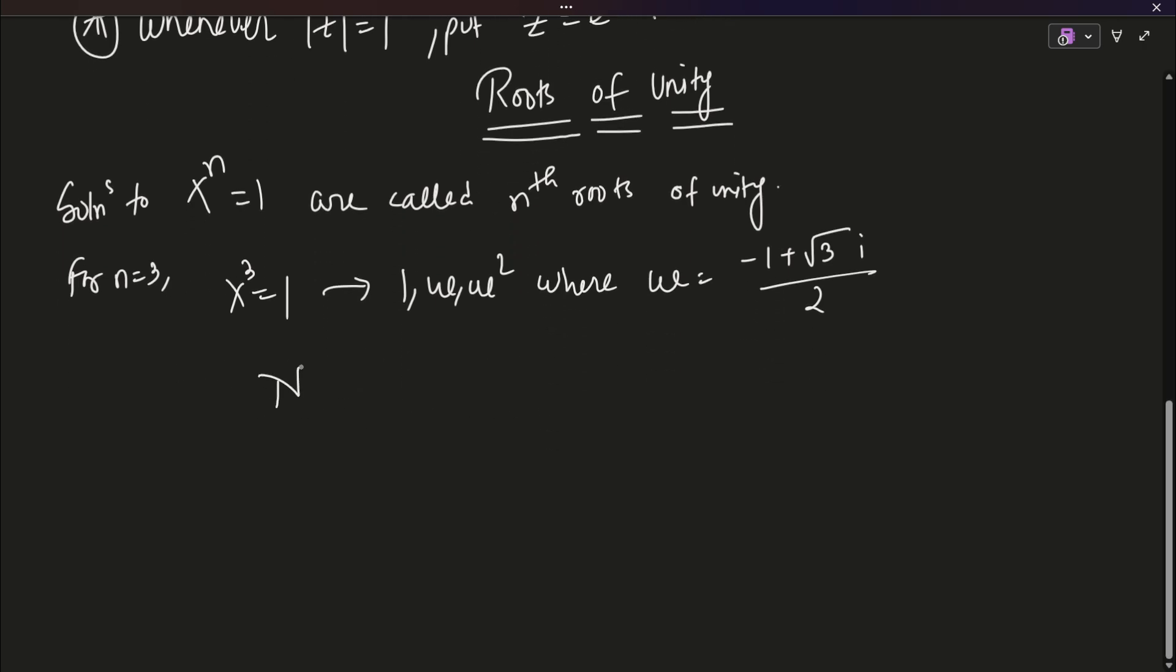What happens is, notice that 1 can be written as cos of 2 pi k where k is an integer plus i into sin of 2 pi k, where again k is an integer. Why is this true? Because, even multiples of 2 pi, like multiples of 2 pi would always produce 1 when put inside cos.